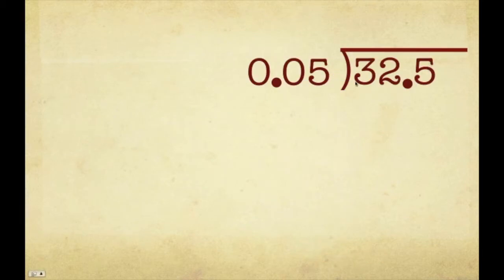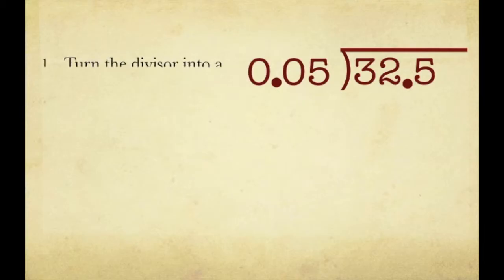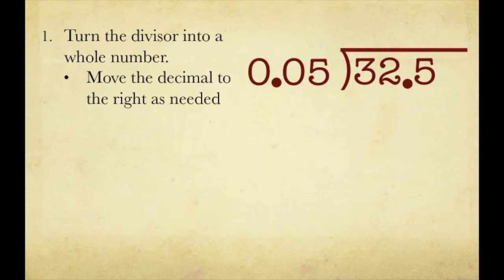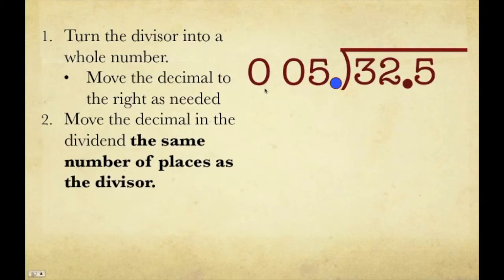So let's say we have 32.5 divided by 0.05. There are four steps to dividing decimals. Our first step is to turn the divisor into a whole number. How do we do that? We move the decimal to the right as needed. Here, our number is 0.05. In order to make this whole, we need to move our decimal two places to the right. Then step 2: we move the decimal in the dividend the same number of places as the divisor.